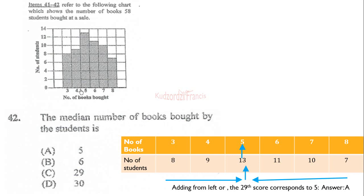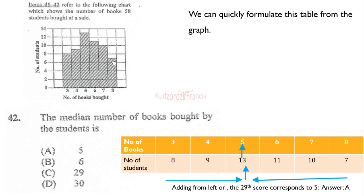For question 42, the median number of books bought by the students — we can quickly deduce a table from the graph. The number of books goes three, four, five, six, seven, eight, and the corresponding frequencies are eight, nine, thirteen, eleven, ten, and seven.